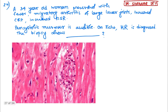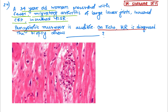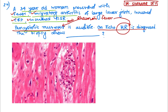Question 24: a 34-year-old woman presents with fever, migratory polyarthritis of large lower joints, increased CRP, increased ESR, and a pan-systolic murmur — on echo, MR is diagnosed. Fever, migratory arthralgia, CRP, and ESR are criteria for rheumatic fever. MR is a complication of acute rheumatic fever. In acute cases, mitral regurgitation (MR) is most common; in chronic cases, mitral stenosis is more common. The diagnosis is rheumatic heart disease (RHD).